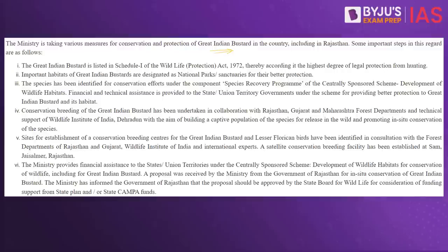The Great Indian Bustard is listed in Schedule 1 of the Wildlife Protection Act of 1972, which has the highest degree of legal protection from hunting. Important habitats are designated as national parks or sanctuaries for better protection. The species has been identified for conservation efforts under the species recovery program of the centrally sponsored scheme. Conservation breeding has been undertaken in collaboration with Rajasthan, Gujarat and Maharashtra Forest Departments. Sites for conservation breeding centers for the Great Indian Bustard and Lesser Floricon have been identified in Rajasthan and Gujarat.